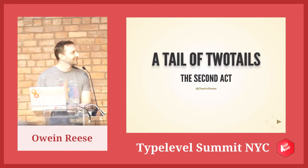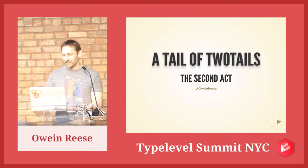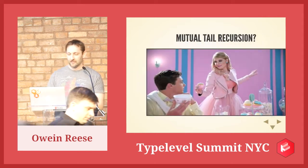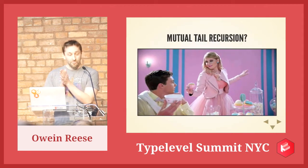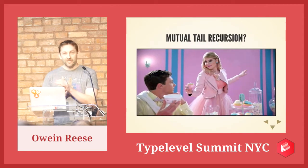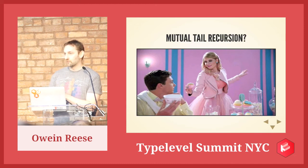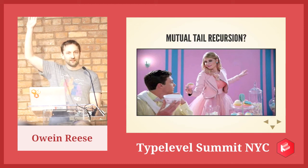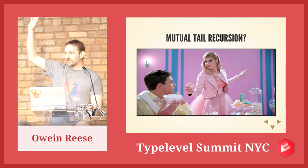Two Tails — what is it, what does it do, and why is it a compiler plugin? Mutual tail recursion. How many of you guys know what that is? Can I see a show of hands? All right, so pretty good.